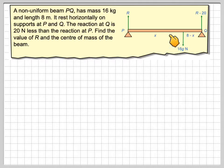Because this beam is non-uniform, the center of mass will not be in the center. We know this is 8 m long. If we let the center of mass be x meters away from P, then this distance here is 8 minus x.